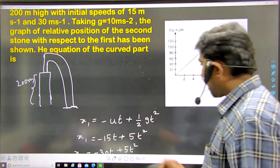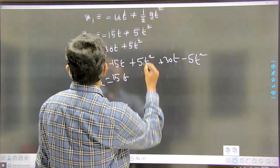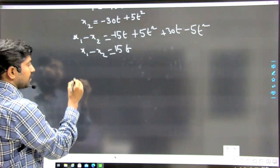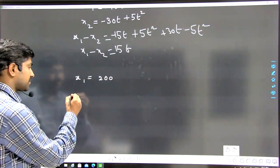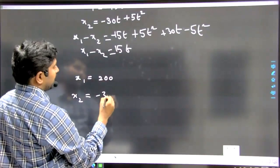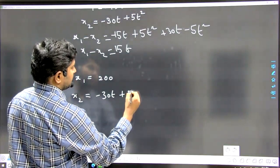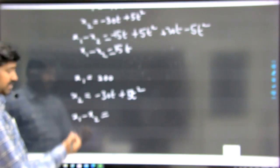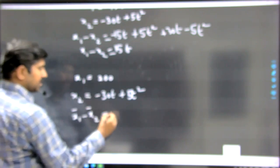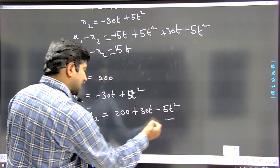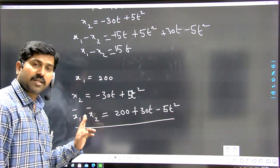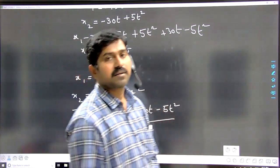After the first particle hits the ground, x1 becomes constant at 200 meters — the total displacement traveled. The second particle x2 is still in air, so x2 equals minus 30t plus 5t squared. The relative position x1 minus x2 then equals 200 plus 30t minus 5t squared. This is the equation for the curved part. The relation between relative position and time for the curved part is 200 plus 30t minus 5t squared.